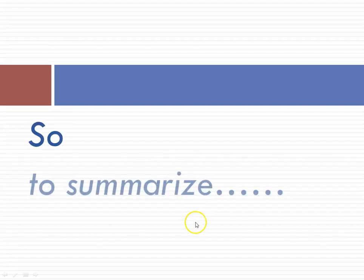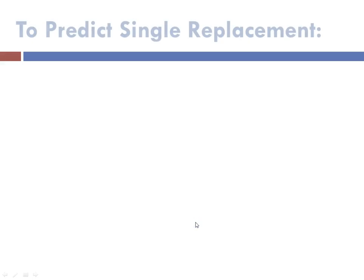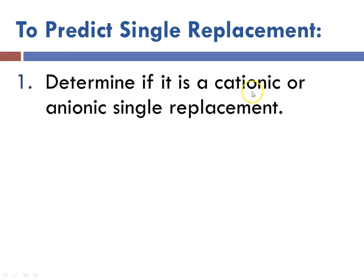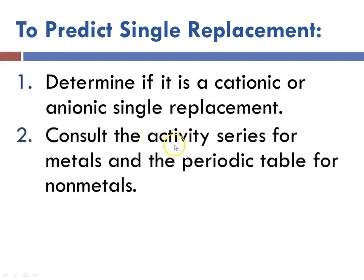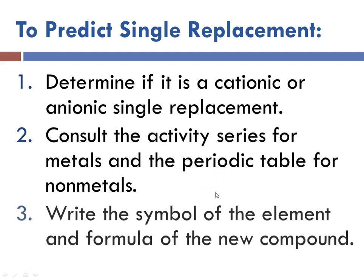To summarize: to predict a single replacement, first determine whether it's cationic or anionic based on whether the replacing element is a metal or a nonmetal. Then consult the appropriate activity series for metals, or the periodic table for nonmetals. Finally, write the symbol of the element and the formula for the new compound, and balance your equation. I hope this helps — I'll be recording more tutorials. This is Ms. Augustine signing off.